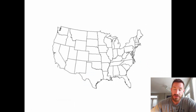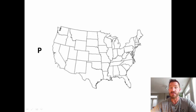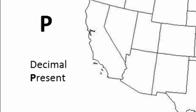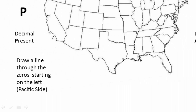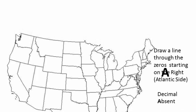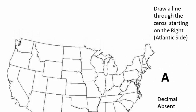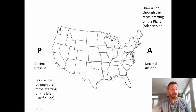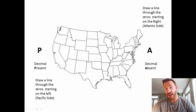Now let's talk about a way to remember all these rules using a map of the United States. The two oceans on each side give us the letters P and A. P stands for decimal present, starting from the Pacific side (left). A stands for decimal absent, starting from the Atlantic side (right). If the decimal is present, draw a line through zeros starting on the left, and all remaining numbers are significant. If the decimal is absent, start from the right and draw through zeros, and all remaining numbers are significant. This gives us the exact same answers as the rules.